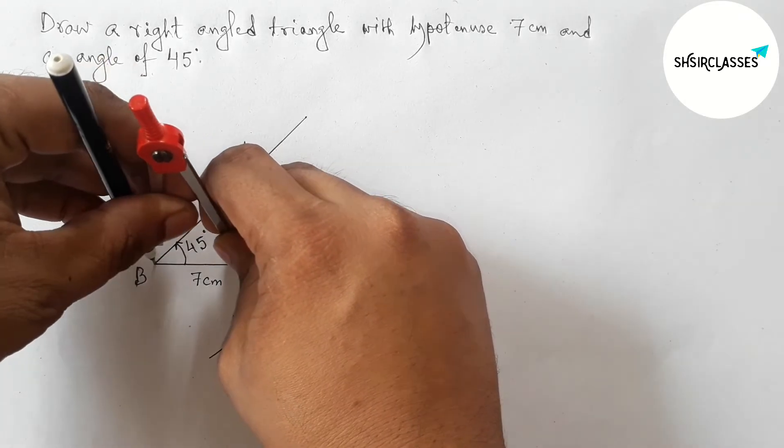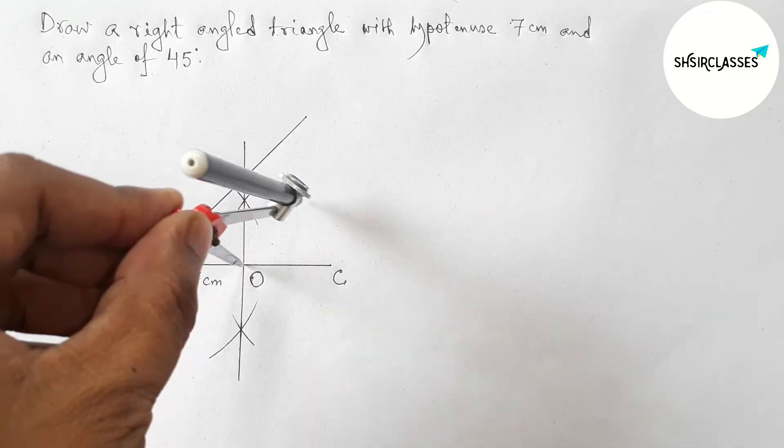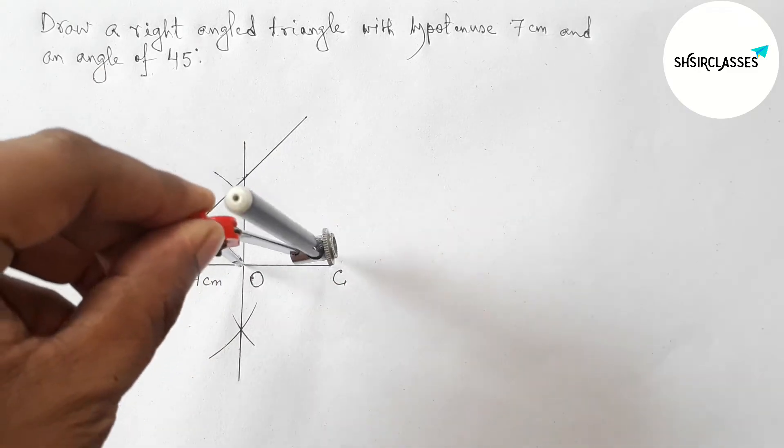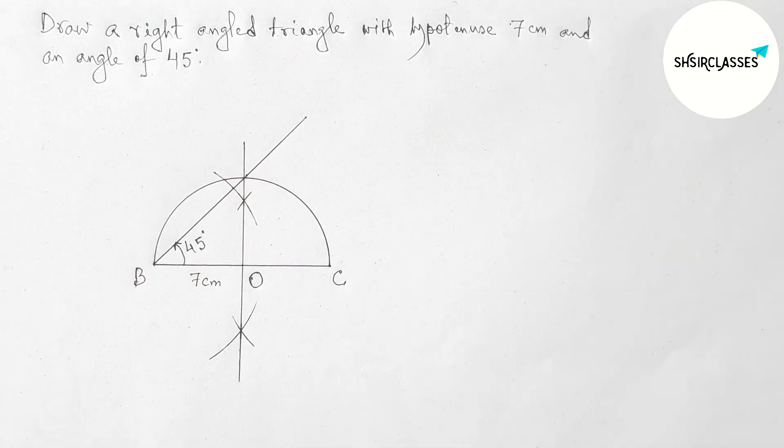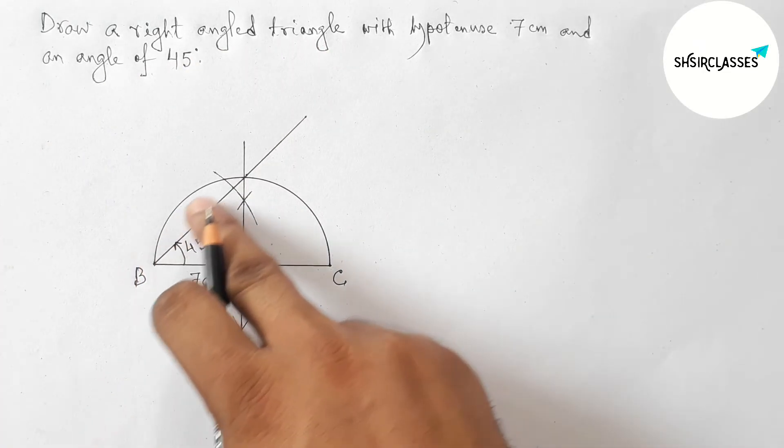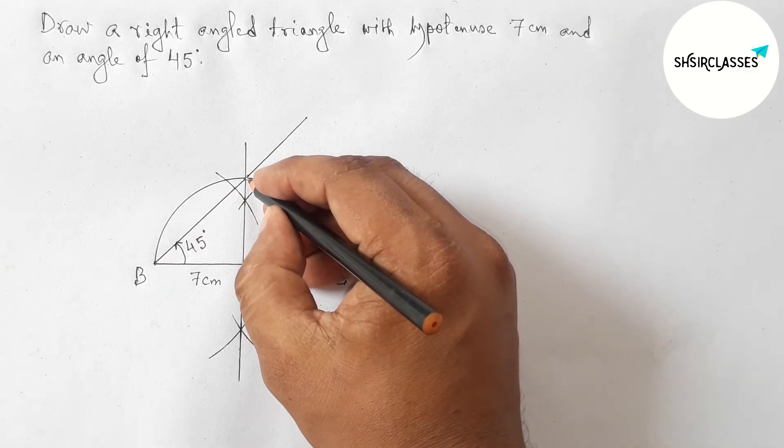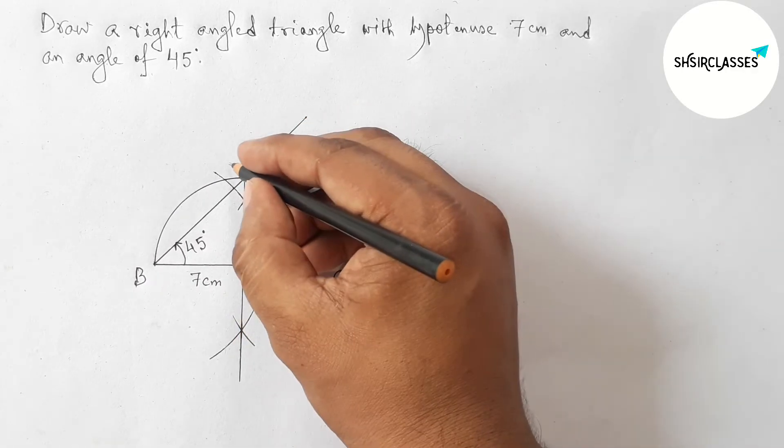Next, taking O as a center and measuring the length OB, OC, and this point. So the semicircle passing through the intersection of the perpendicular line and the angle 45.